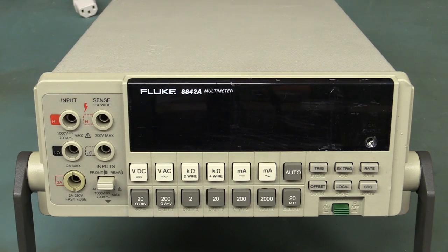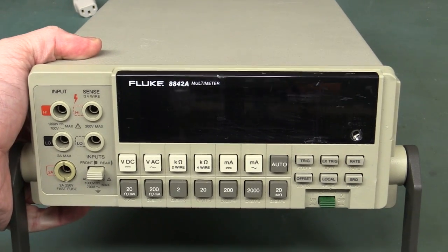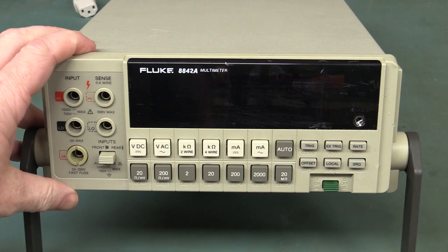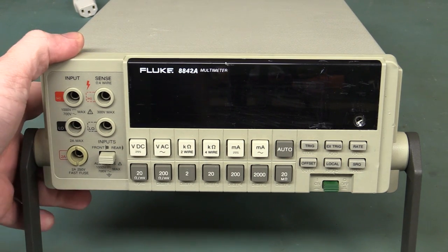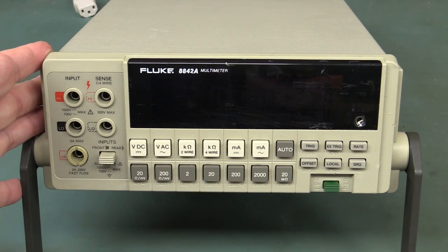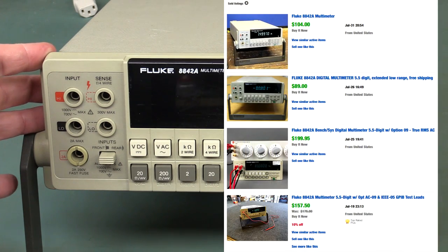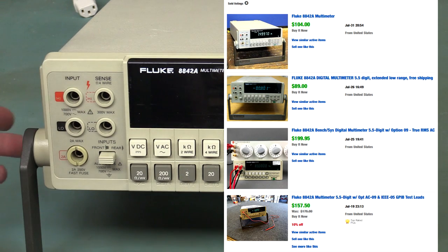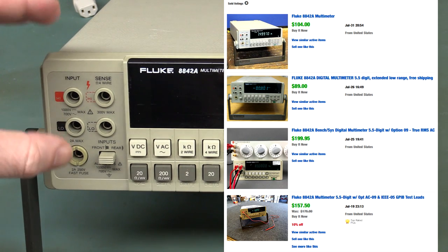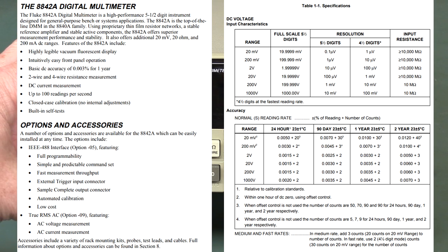Hi! Let's take a look at the Fluke 8842A Multimeter. It's a 5.5 digit multimeter, and it is probably one of the best second-hand meters you can pick up on eBay. It's a 0.003% basic DC accuracy class instrument. There's practically 6.5 digit class accuracy for a 5.5 digit meter. Fantastic!